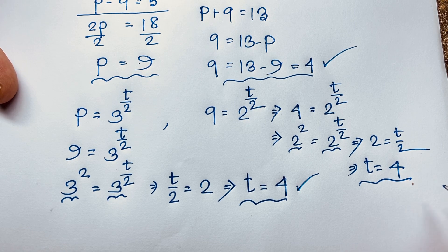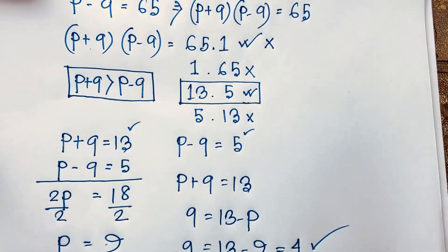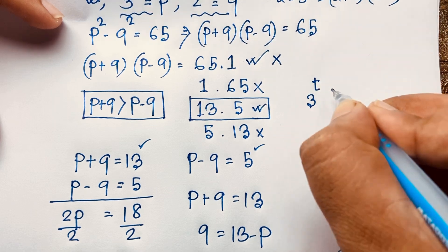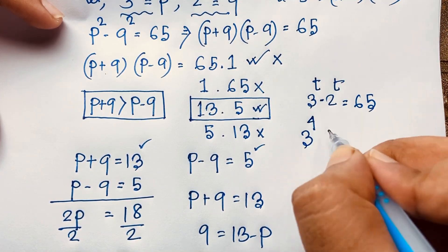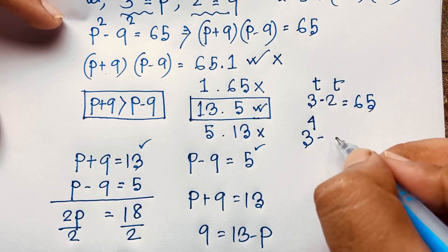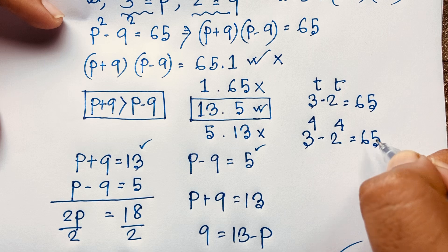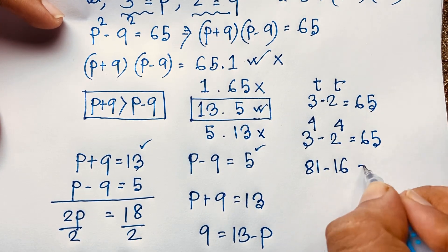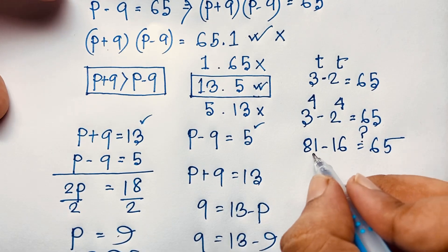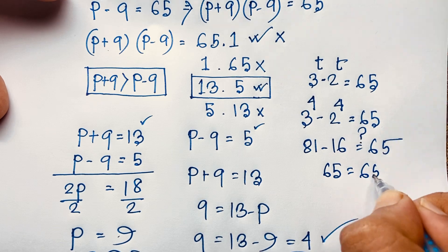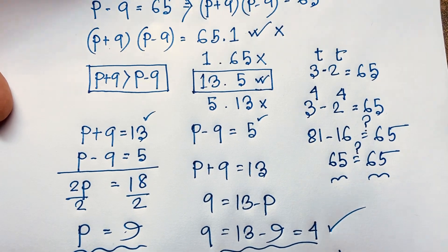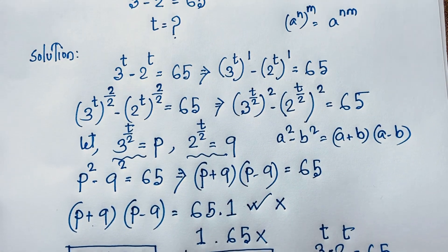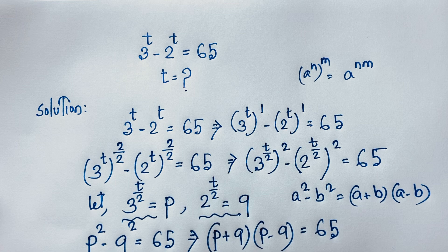Let's verify the original equation: 3 to the power t minus 2 to the power t equals 65. With t equals 4, this becomes 3 to the power 4 minus 2 to the power 4, which is 81 minus 16, equals 65. Left-hand side equals right-hand side, so t equals 4 is confirmed as our final answer. Thank you all — if you enjoyed this math olympiad question, please subscribe for more interesting videos.